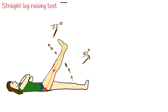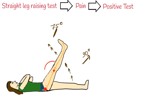During the straight leg raising test, the leg is lifted actively by the patient or passively by the clinician. The patient lies on their back on an examination table, and the examiner lifts the patient's leg while the knee is straight. If pain worsens when the straight leg is at an angle between 30 and 70 degrees, the test is positive and a herniated disc is a possible cause of the pain.